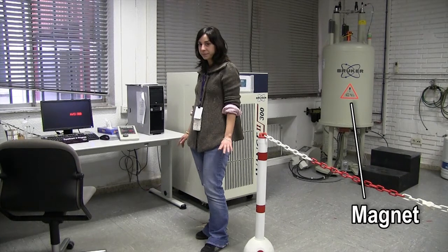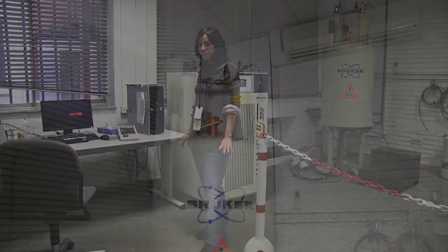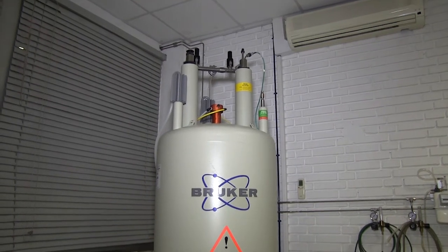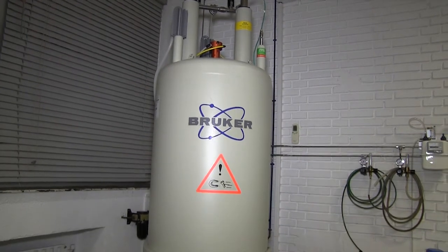Our NMR spectrometer consists of 3 main parts: the magnet, the console, and the computer, from which we can control everything. The sample is introduced in the magnet by the upper part of the big metal cylinder that contains a supercooled, superconducting solenoid that creates an intense magnetic field.